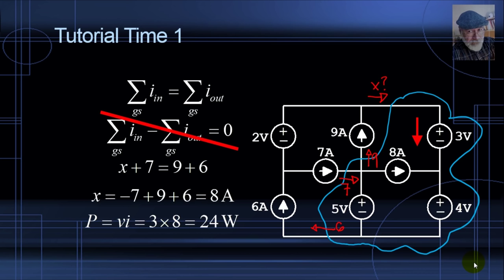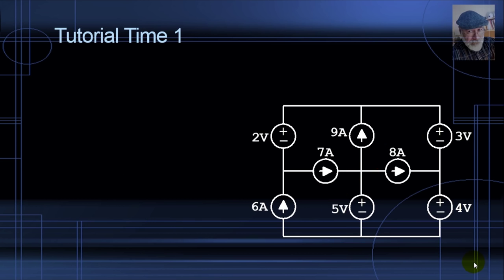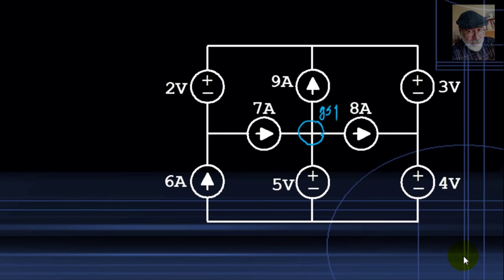We could have solved the same exercise in a much longer way using KCL three times — applying it successively to three different Gauss surfaces to find intermediate currents before reaching x. But by doing that, we multiply by three the possibilities of making a mistake. It is better to use KCL only once if we can.